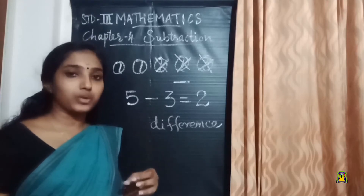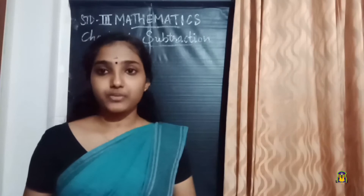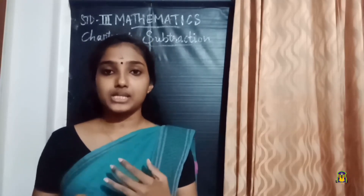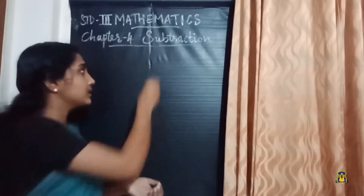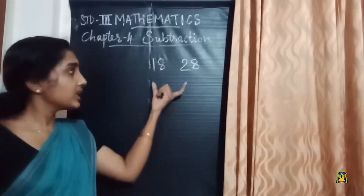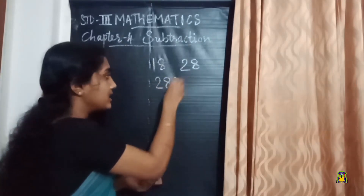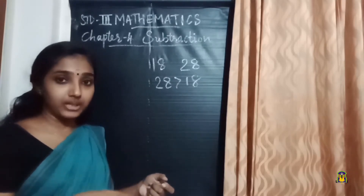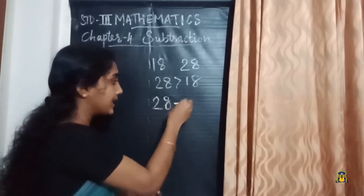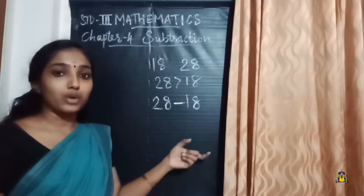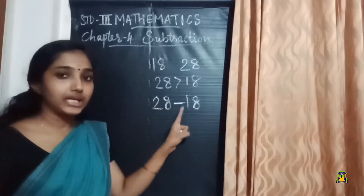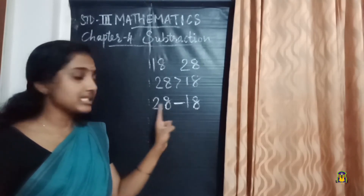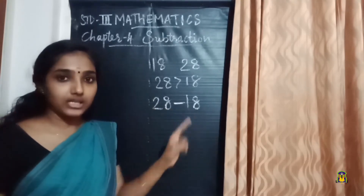While doing subtraction, there are some points to keep in mind. The first point is that we always subtract a smaller number from a bigger number. For example, we have two numbers: 18 and 28. Here 28 is the bigger number. So we write it as 28 minus 18 — the bigger number comes first, then the smaller number. This is read as: 18 is subtracted from 28.